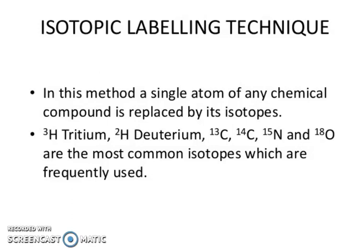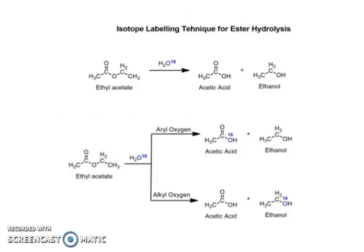In this method, a single atom of any chemical compound is replaced by its isotope. Tritium, deuterium, carbon-13, carbon-14, nitrogen-15, and oxygen-18 are the most common isotopes which are frequently used. You can see in this reaction the isotope labeling technique for ester hydrolysis. Ethyl acetate gives acetic acid and ethanol. The question is whether the cleavage is at the aryl oxygen or alkyl oxygen bond. You can see where the oxygen-18 label ends up in the products.